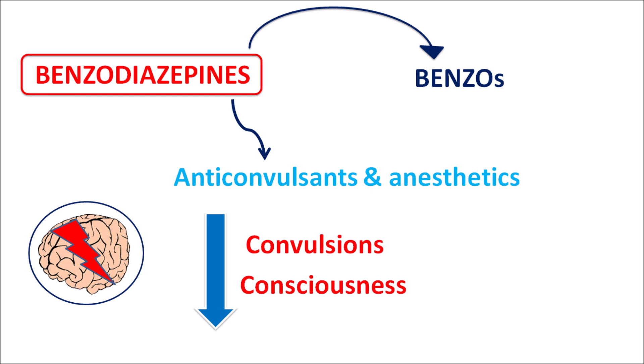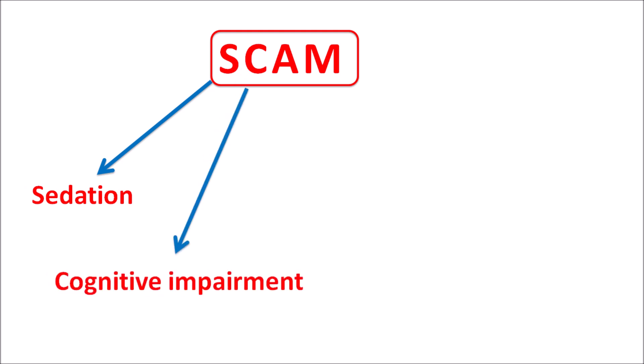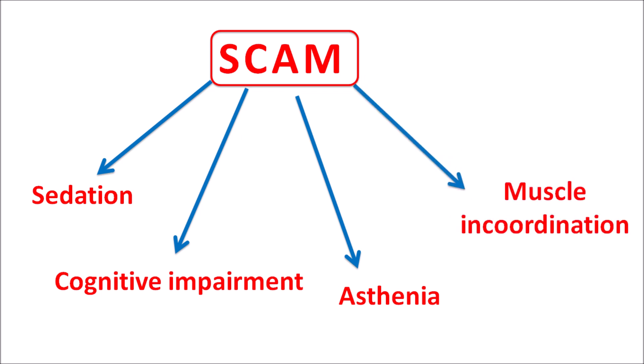The different side effects produced by benzos can be remembered with a simple code: SCAM. Every letter indicates one set of side effects — S indicates sedation, C indicates cognitive impairment, A is asthenia, and M is muscle incoordination. So we can easily remember the side effects as SCAM: sedation, cognitive impairment, asthenia, and muscle incoordination.